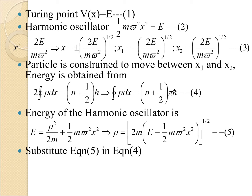The particle is constrained to move between x₁ and x₂. The energy of the harmonic oscillator is obtained using the WKB formula: 2∫p dx = (n + ½)h, or equivalently ∫p dx = (n + ½)πℏ. Since E = p²/2m + ½mω²x², we get p = [2m(E − ½mω²x²)]^(1/2).